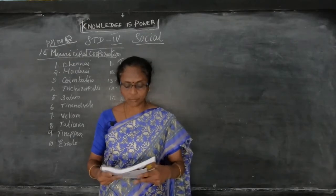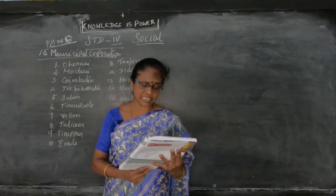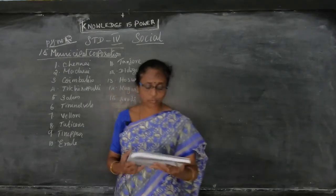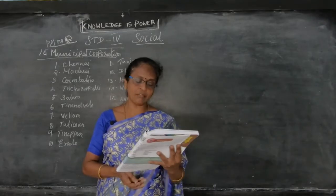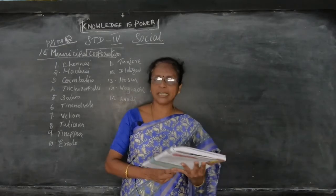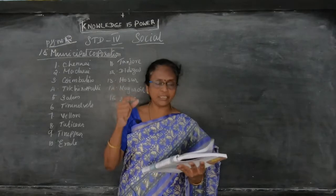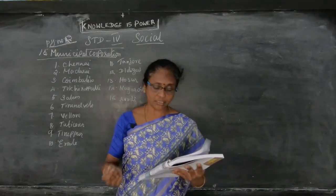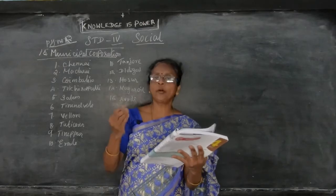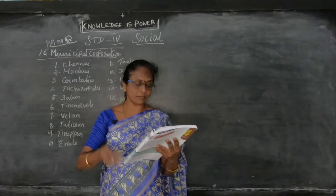Okay, good. Now take page number 154 - the glossary. What do you mean by government? Government means the political system by which a country is administered - the political system by which governance is carried out.